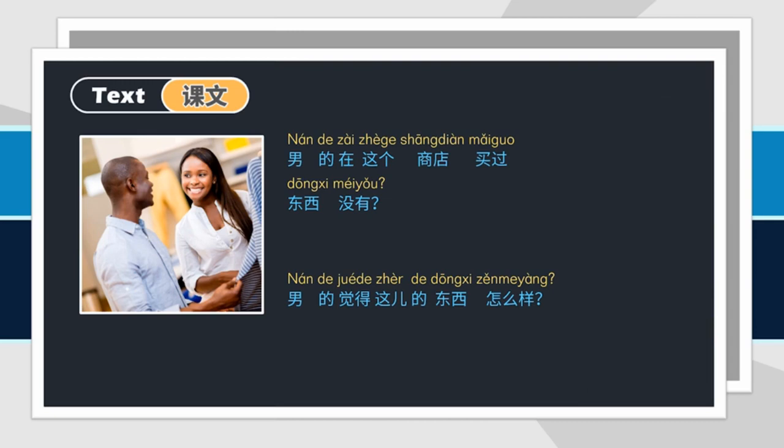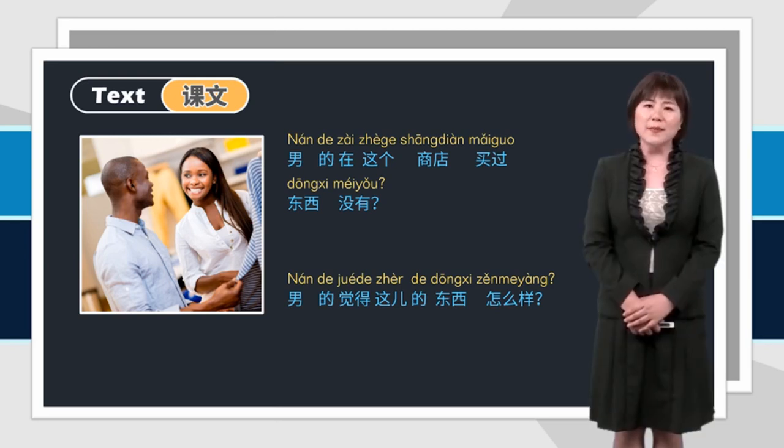你在这个商店买过东西没有？买过一次。这儿的东西还可以，就是不便宜。我喜欢这件衣服，但是觉得有点贵。两百块还可以。喜欢就买吧。